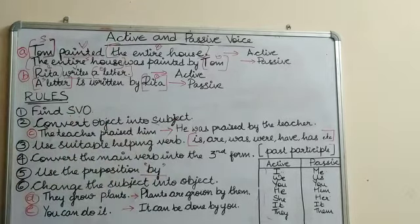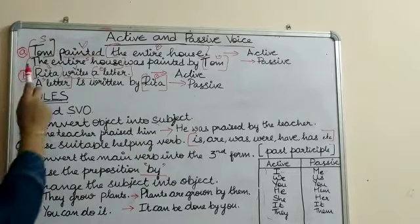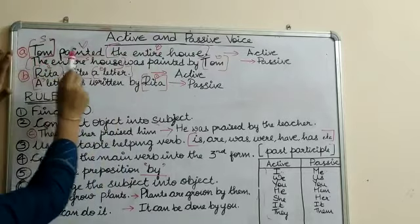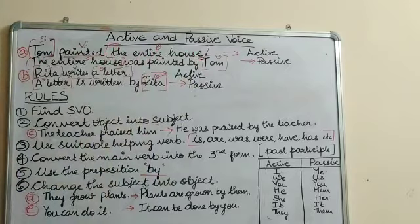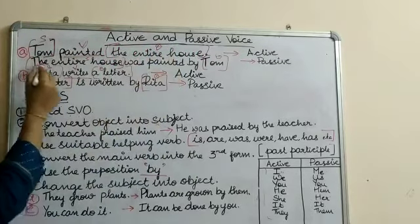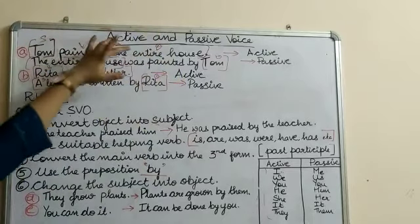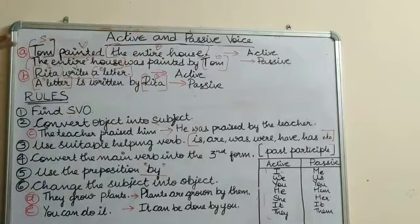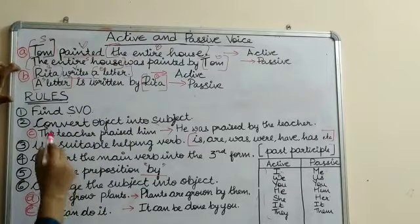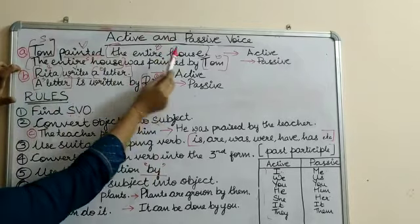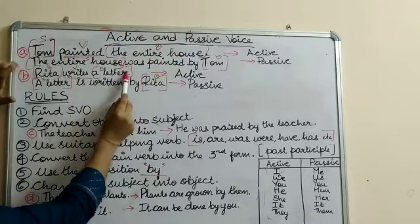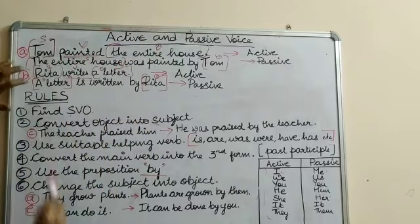The second rule is to convert the object into the subject. In 'Tom painted the entire house,' the object is the entire house — the receiver of the action — and this object changes to the subject when we change active to passive.